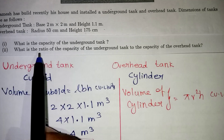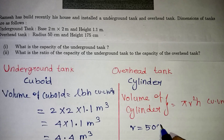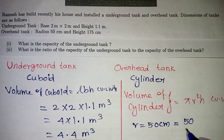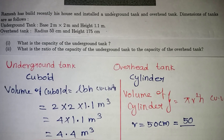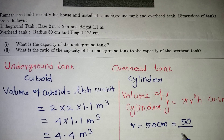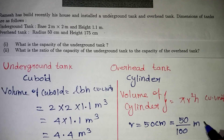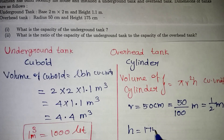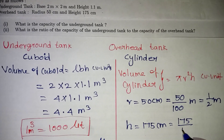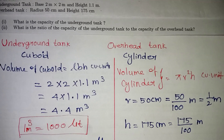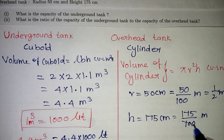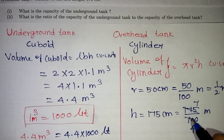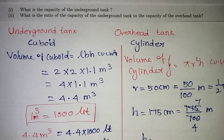The radius is 50 cm. We need to convert to metres: 50 ÷ 100 = 1/2 metre. The height is 175 cm, which equals 175 ÷ 100 = 7/4 metres. Now we substitute into the formula: Volume = π r² h.